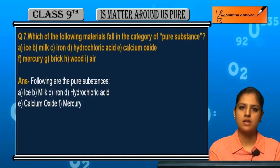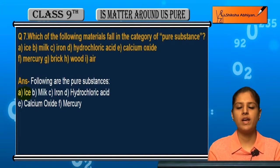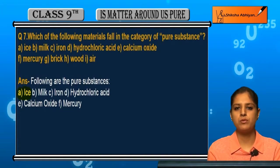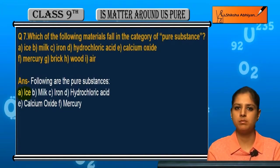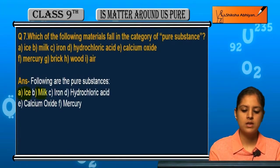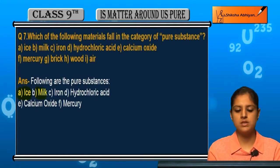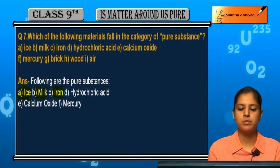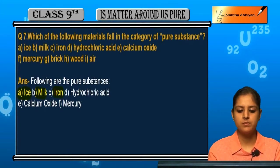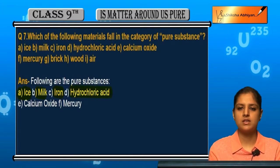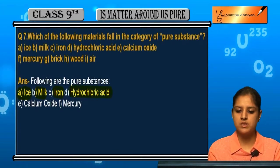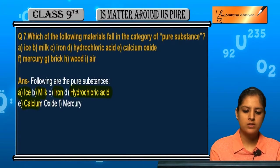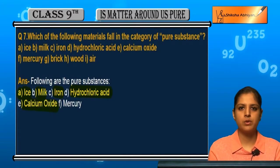First hai ice — ice is a pure substance, chunki uska H2O composition hota hai aur wo ek hi type ke particles se bana hota hai. Milk is a pure substance. Iron is a pure substance. Hydrochloric acid, that is HCl, is a pure substance. Calcium oxide is a pure substance.